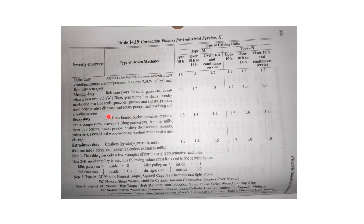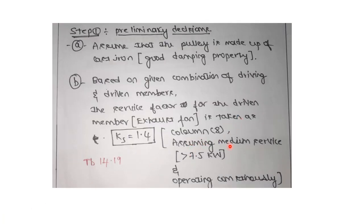In table 14.19, first check for the driven unit — fans over 7.5 kilowatt (this problem is 10 kW). Select that column for your Ks value. For the driving unit, induction motor falls in category B, which is category N. Assuming continuous service operation, we pick the value of 1.4. So assuming medium service above 7.5 kilowatts operating continuously, Ks = 1.4.